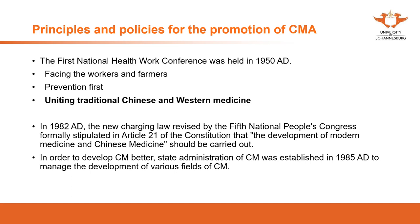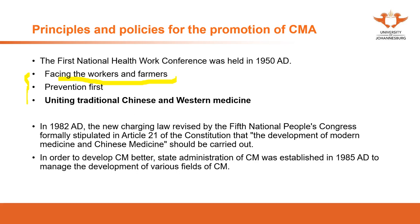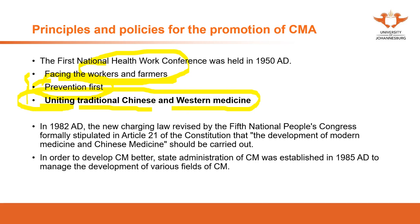At the first National Health Work Conference in 1950, President Mao appealed the three principles: first, facing the workers and farmers — we need to help and support them; second, prevention — we need to prevent diseases; and third, we need to unite traditional medicine and Western medicine. These principles have remained in effect even today.